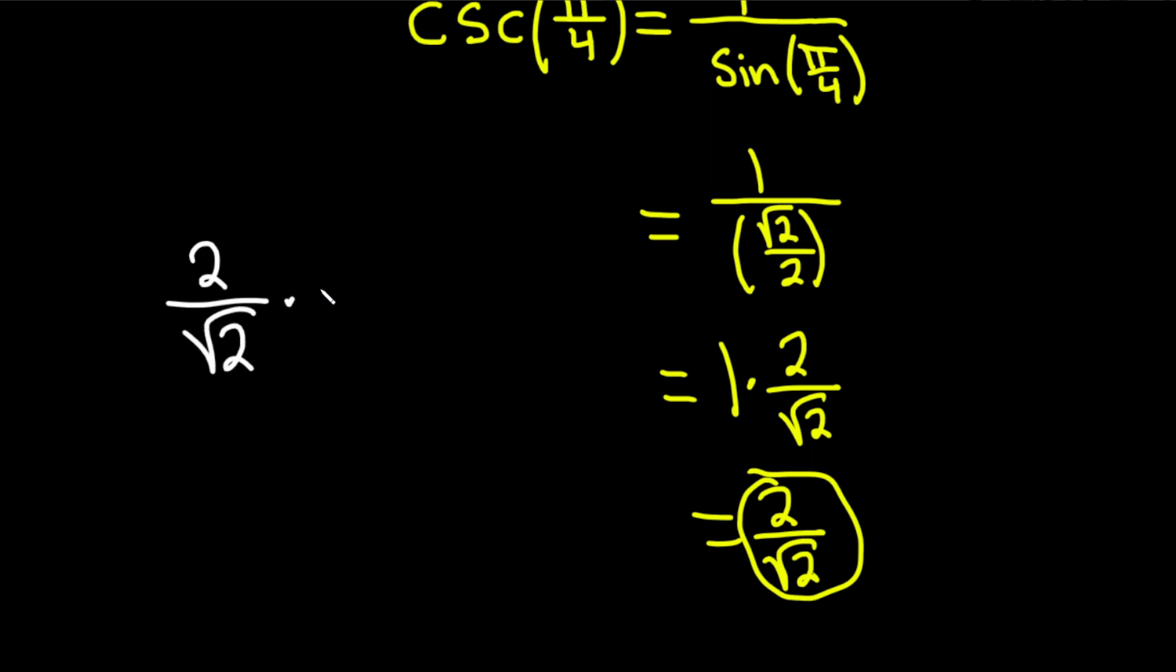Which means you would multiply by the square root of 2 over the square root of 2, which is essentially 1. And this is going to eliminate the square root of 2. Watch this.